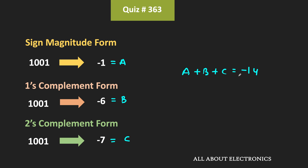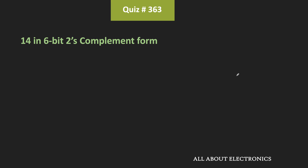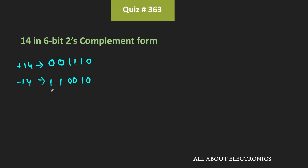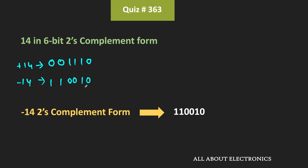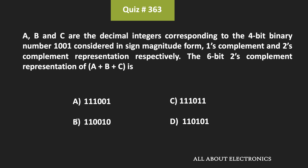Now let us represent minus 14 in 6-bit two's complement form. First, we represent plus 14 as 001110. Then we take the two's complement: starting from the LSB, keeping bits until the first one, then flipping all remaining bits. The two's complement gives us 110010, which corresponds to minus 14. So the answer to the given question is option B.